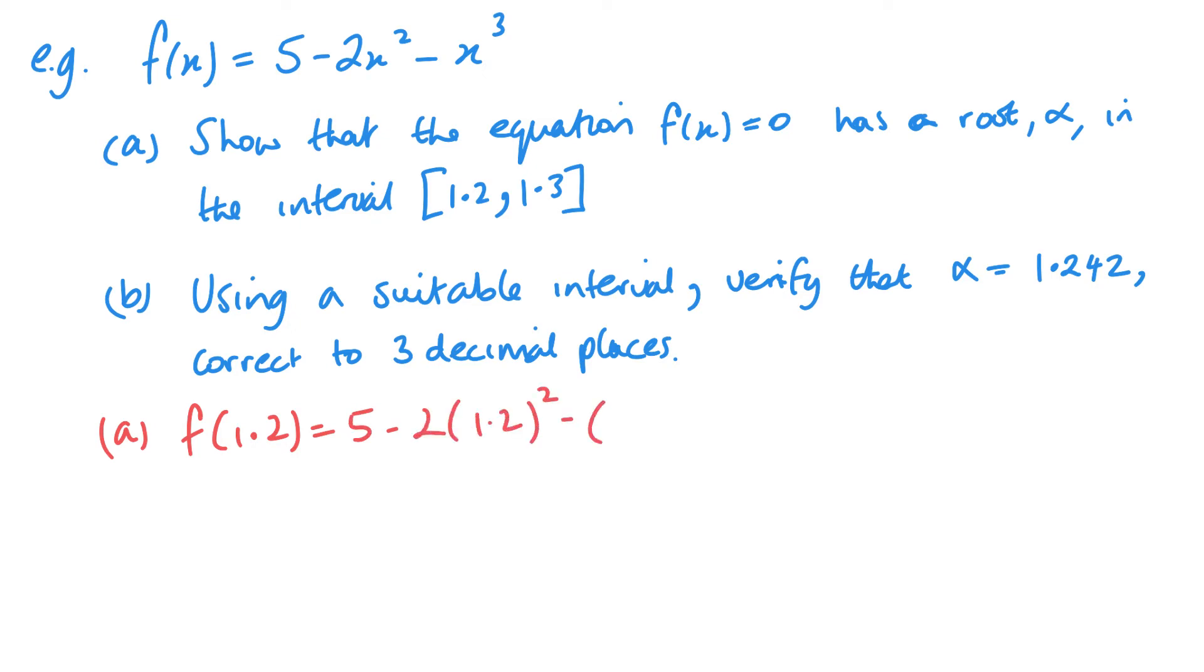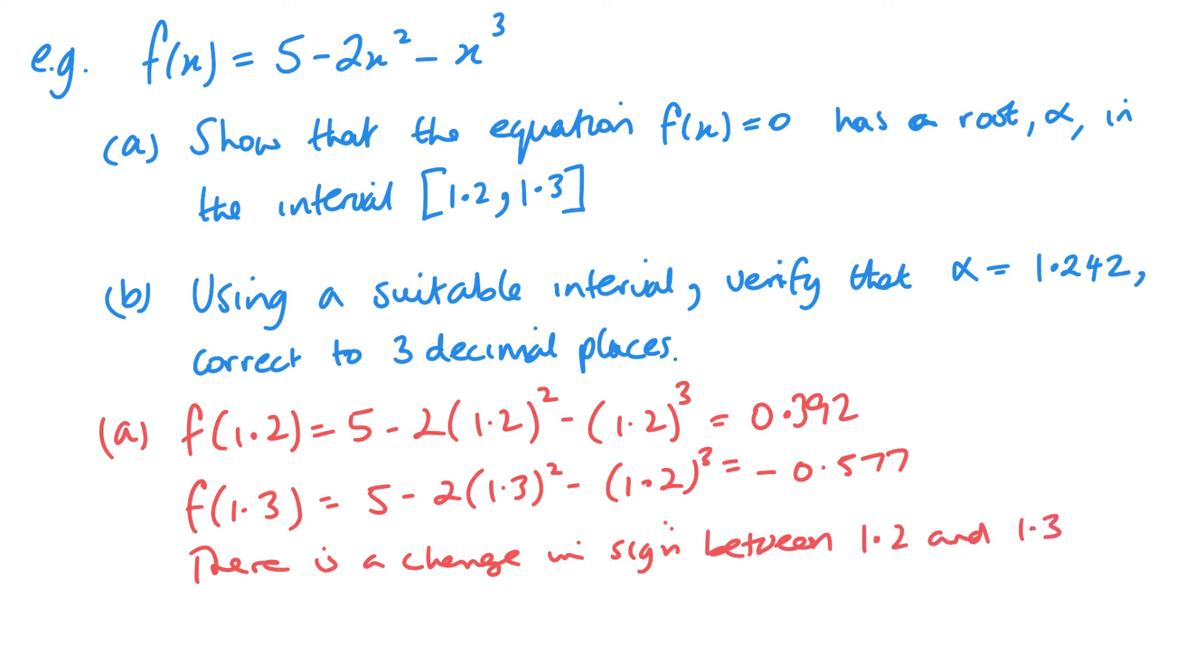So substituting 1.2 in, we get 0.392. And then substituting 1.3 in, and we're hoping for a changing sign, and a changing sign will indicate that there is a root there. And we get minus 0.577. And now I just need to finish it off with a short sentence. There is a change in sign between 1.2 and 1.3. So there is at least one root in the interval 1.2 to 1.3.